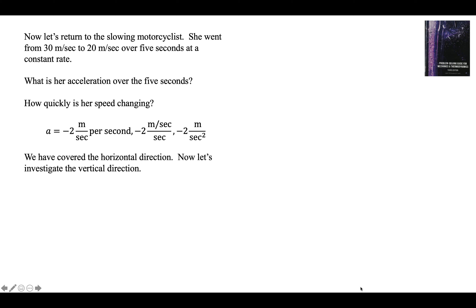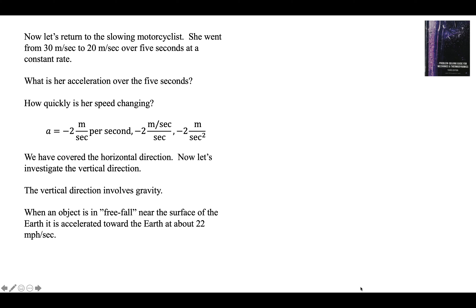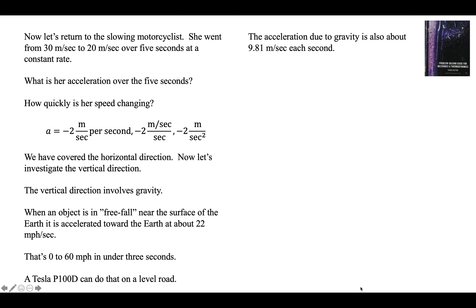We've covered the horizontal direction; now let's do the vertical direction, which involves the gravitational force — the gravitational acceleration. What is the acceleration due to gravity on Earth in miles per hour each second? If you drop a rock off a cliff, how fast is it going after 3 seconds? When the object is in free fall near the surface of the Earth, it's 22 miles per hour per second. Zero to 60 in under 3 seconds — the Tesla P100D can do that on a level road. The acceleration due to gravity is about 9.81 meters per second each second, or 32 feet per second each second. We use lowercase g to represent the acceleration due to gravity.